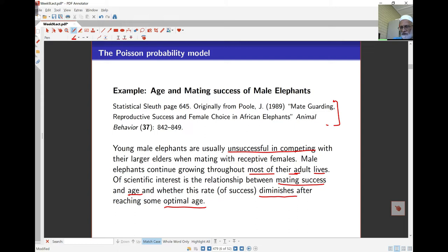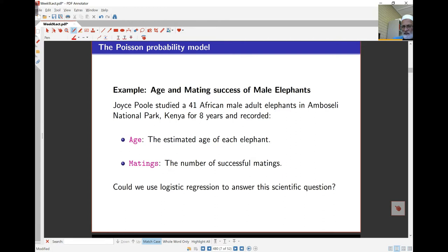So the data here consists of 41 African male adult elephants in this Amboseli National Park in Kenya over an eight-year period. And what we have here is the estimated age, and the number of matings. So this can be observed whereas this is estimated. And the other issue here with the data, of course, is because this is over an eight-year period, the elephant will grow older over the eight years. Exactly what age was used here is unclear. That's one problem with the data that we need to be aware of.